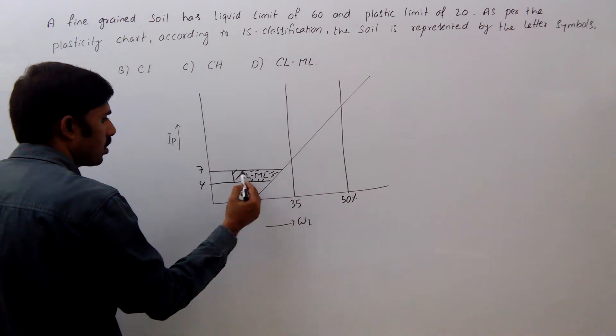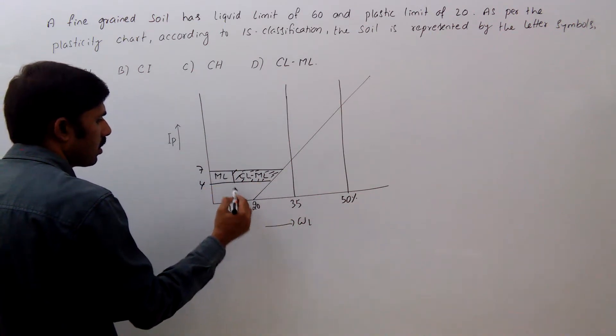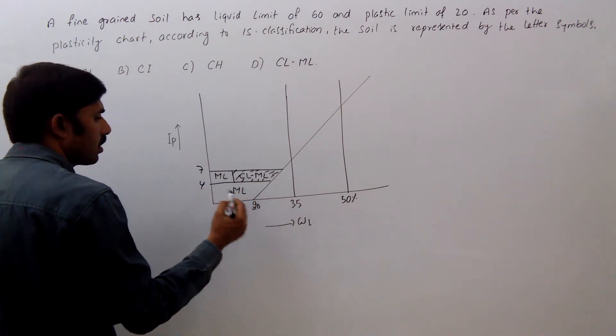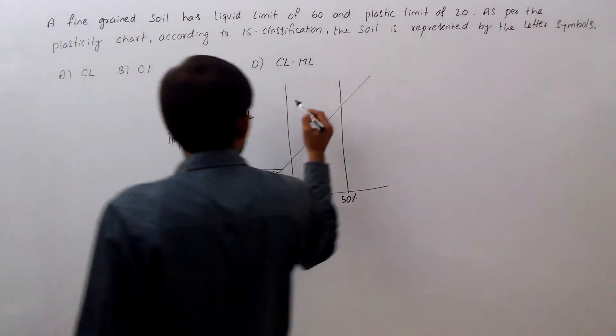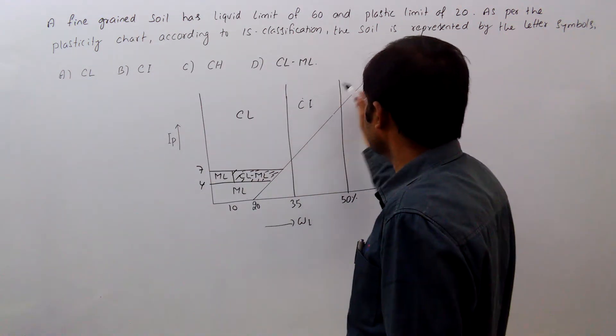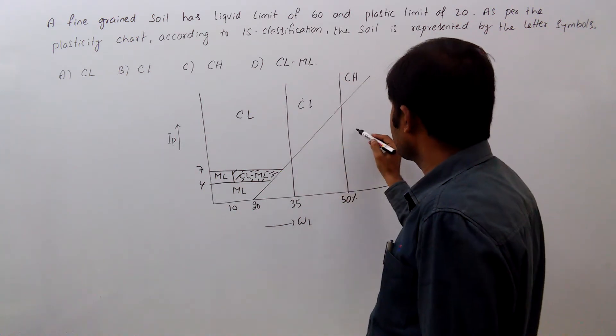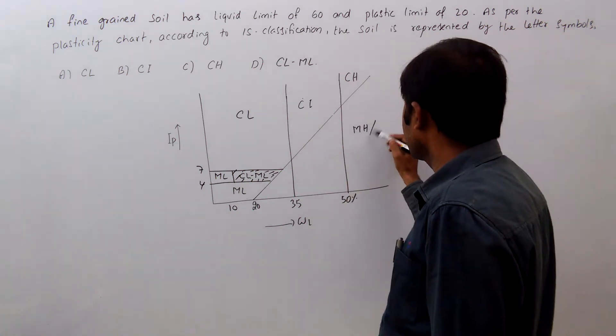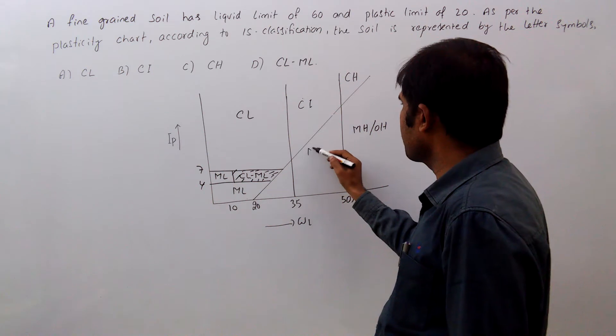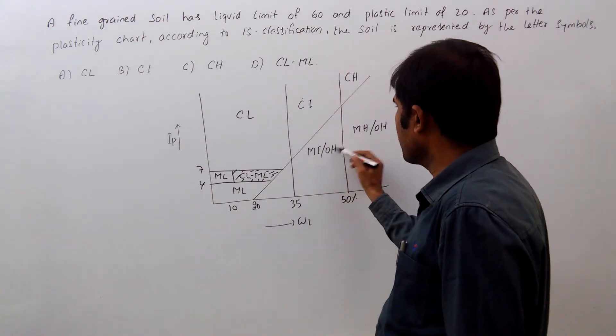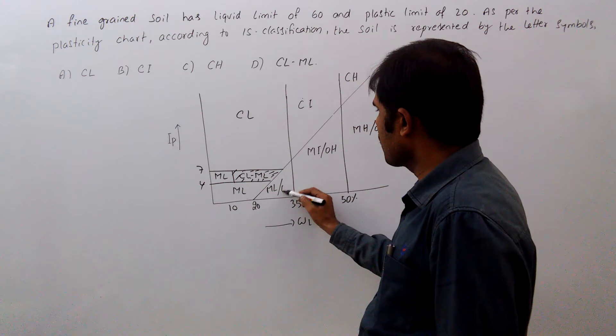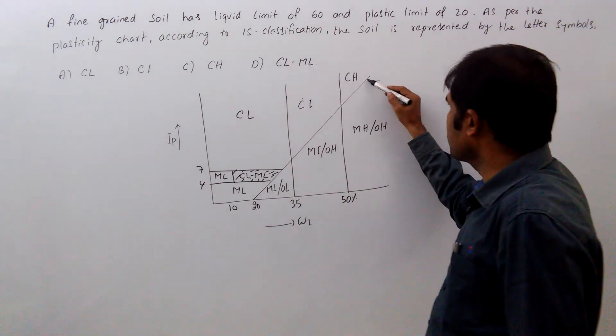This zone is ML, this is also ML. This is CL, this is CI, this zone is CH. This zone is MH. This is MI, this is ML. This is A line.